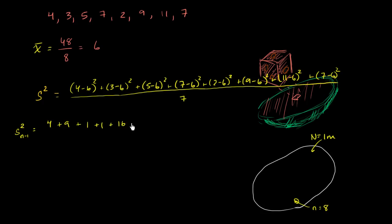9 minus 6 squared, well that's going to be 9. 11 minus 6 squared, that is 25. And then finally, 7 minus 6 squared, that's another 1. And we're going to divide it by 7.